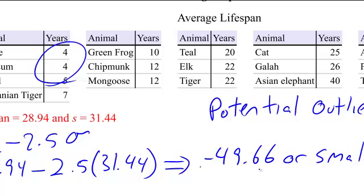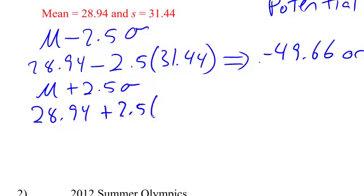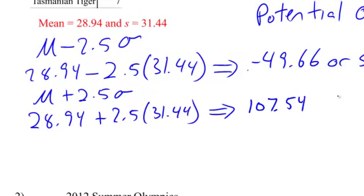On the upside, it's going to be mu plus two and a half standard deviations. So 28.94 plus 2.5 times 31.44. That gives me 107.54, or greater.